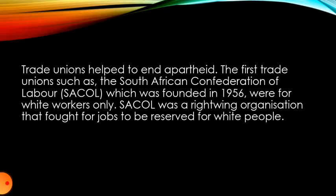Trade unions helped to end apartheid — that is how powerful they are. The first trade unions, such as the South African Confederation of Labour (SACOL), were founded in 1956 and were for white people only. SACOL was a right-wing organization that fought for jobs to be reserved for white people.